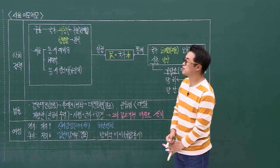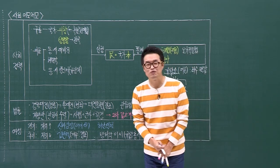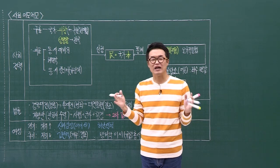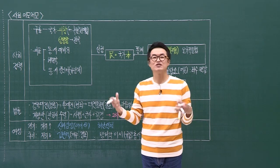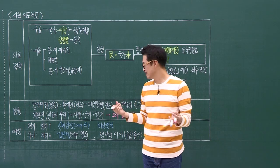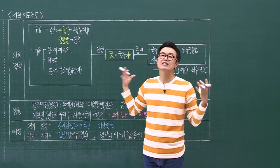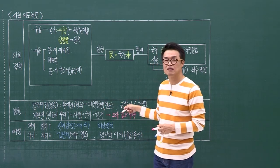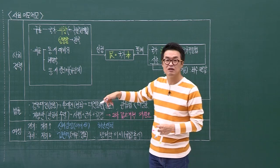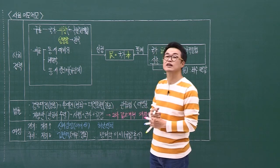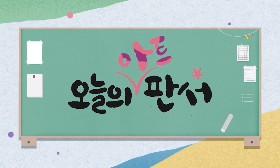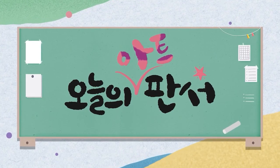이렇게 해서 조선의 사회를 한번 살펴봤습니다. 조선왕조 500년 동안 이 사회가 참 많이 변하고 있네요. 신분제가 동요하고 있고, 민의 의식들이 성장하고 있는 모습들. 근데 유독 여성들의 지위만 오히려 역행하고 있는 그런 모습들이 나타나는 건 아닌가 라는 생각이 들면서 오늘 강의 마치도록 하겠습니다. 감사합니다.